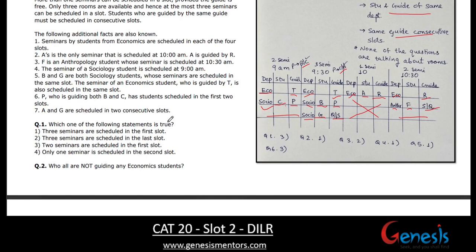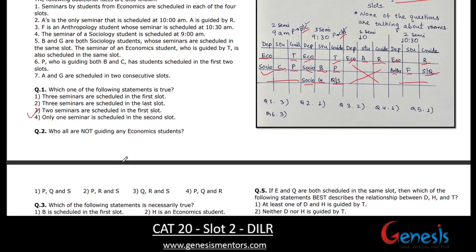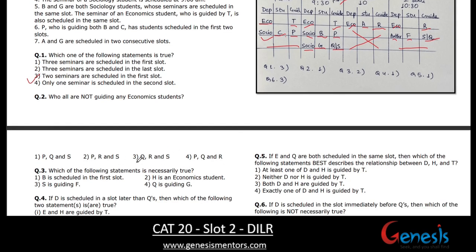For Question 1 — which statement is true? Three seminars in the first slot? No, there are two. Three in the last slot? No. Two seminars in the first slot? Yes — this is true in all cases. For the next part: which guides are not guiding any economics student? T and R are guiding economics students. So the guides not guiding economics are P, Q, and S — that is the correct answer.